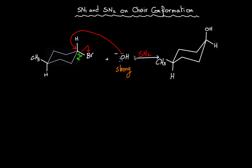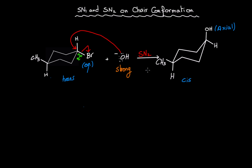An SN2 mechanism results in inversion of configuration. Looking at CH₃ and Br, they are facing opposite sides, so this is a trans configuration. Here, CH₃ and OH are both facing up, making this cis — so SN2 gives inversion of configuration. One important note: if the halide is on the equatorial bond, the nucleophile will sit on axial, and vice versa, which results in inversion of configuration.